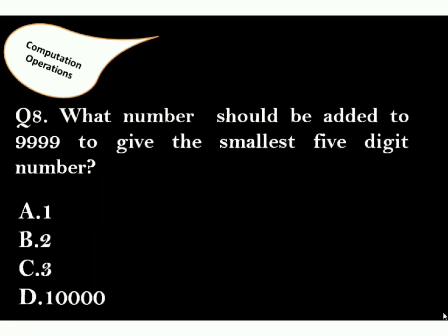Question 8: What number should be added to 9999 to give the smallest 5-digit number? Correct answer is option A. After adding 1, it will be 10,000 that is smallest 5-digit number.